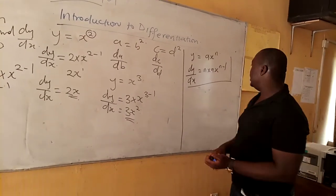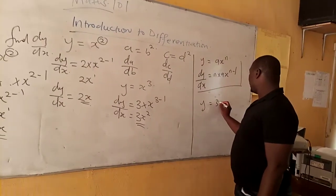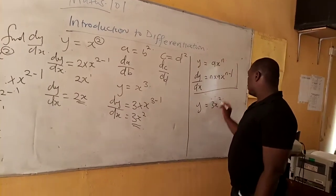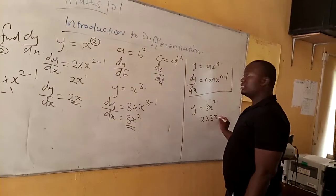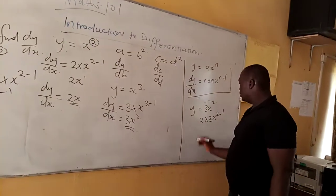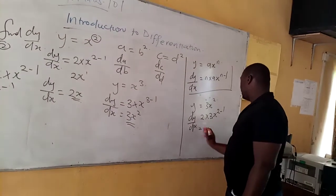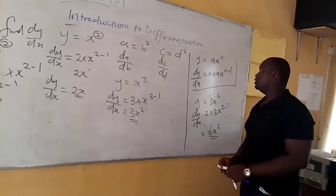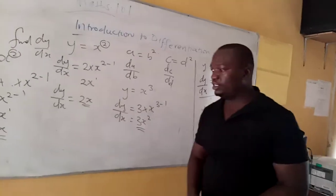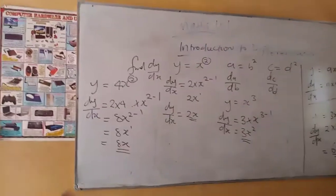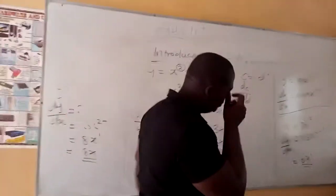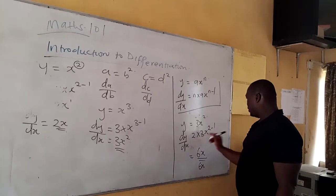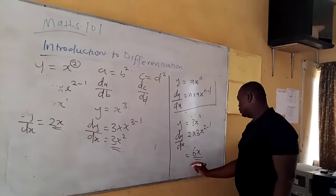The most important thing to note here: if I give you y is equal to 3x squared, your n is 2, so you multiply n by a, giving you 2 times 3x, then n which is 2 minus 1. So dy over dx is 6x to the power of 2 minus 1. Since 2 minus 1 gives you 1, this equals 6x.